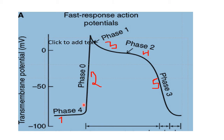In fast response, phase 0 is steep, but in slow response it is not steep. The plateau phase is long in fast response but very short or absent in slow response. Repolarization is slow in slow response and converts into hyperpolarization, which does not occur in fast response.